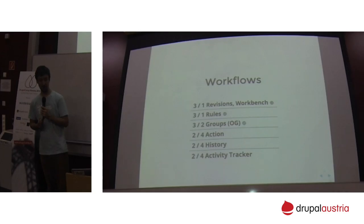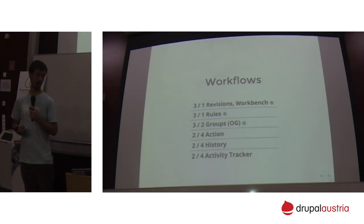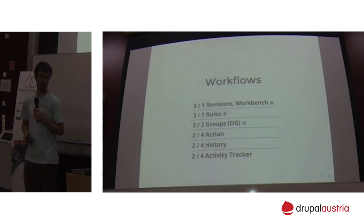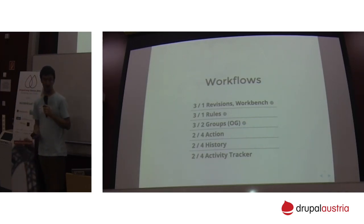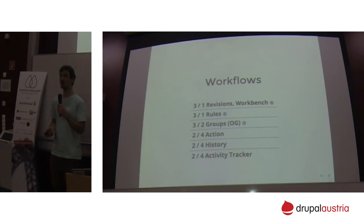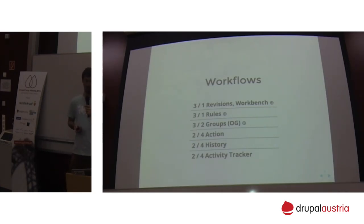Organic Groups has a started port, but I haven't seen a use case where it's really in production yet. When you look at Drupal core specifically, there's an action module, but note that Rules have to support the action system, so I wouldn't rely too much on actions at the moment. And I honestly don't use the history or activity tracker modules.